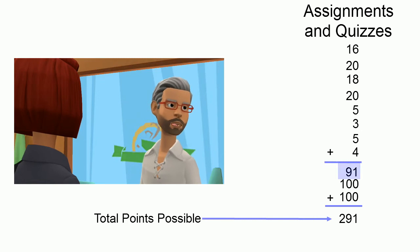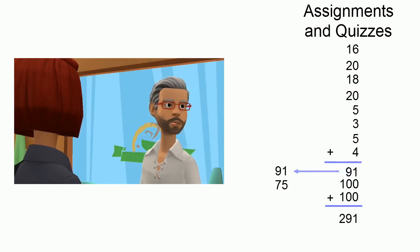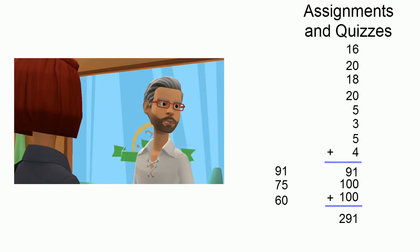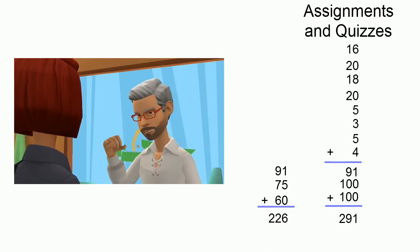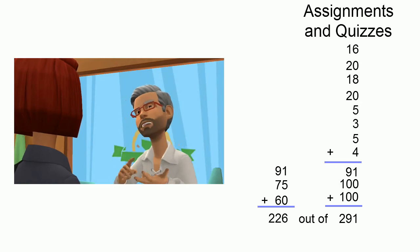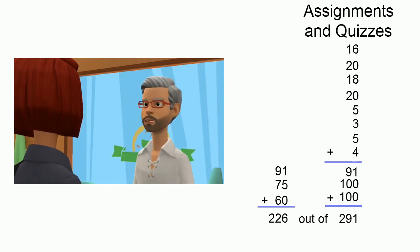Now you got 91 points on the assignments, 75 on the midterm, and let's say 60 on the final. That gives you 226 points. So 226 out of 291 gives you a 78%.